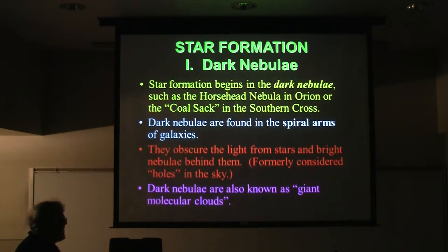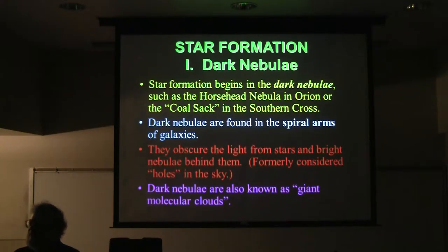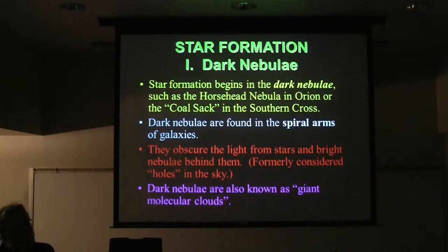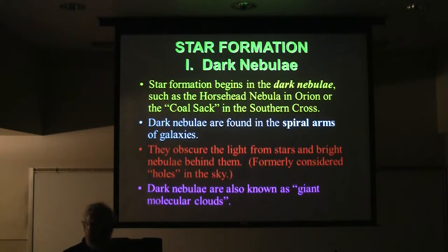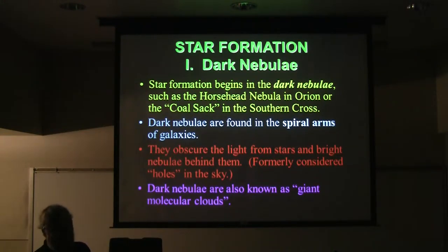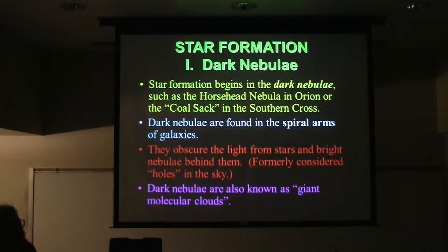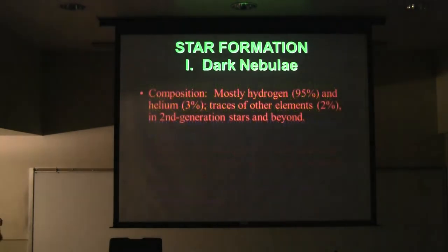These are also known as giant molecular clouds. At that very low temperature — just a few degrees above absolute zero — hydrogen atoms can associate into H₂ diatomic molecules. Heat drives them apart, but at that low a temperature you actually have H₂ gas in fairly high abundance. So they're called giant molecular clouds.